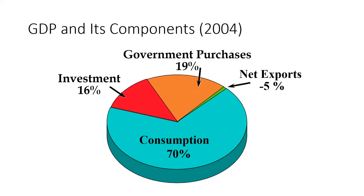When you look at the GDP components and their weight, for the United States in 2004, consumption occupies fully two-thirds — about 70% — of GDP. Next is government purchases at around 19%, then investment at 16%, and negative net exports at about -5%, reflecting that the value of imports exceeded exports. As an exercise, you can take data from your own country and calculate the components in this way.